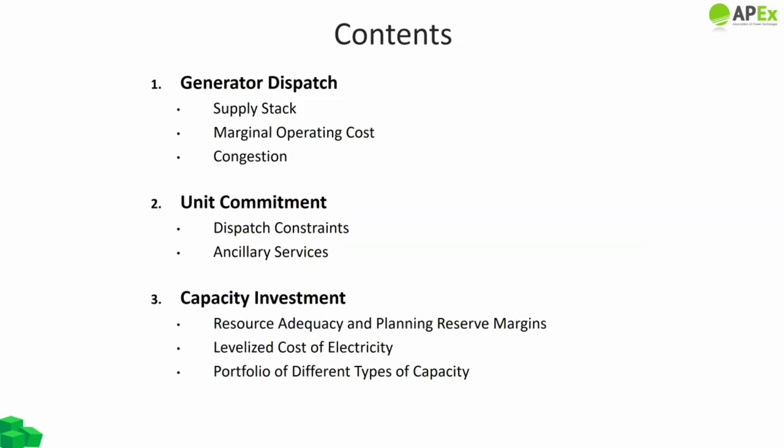Today's session sequence will be: first, generation dispatch, covering the supply stack, marginal operating cost of different generating units, and the impact of congestion on dispatch decisions. Then unit commitment with dispatch constraints and ancillary services. Finally, investment decisions: resource adequacy, planning reserve margins, levelized cost of electricity, and portfolio of different generation types.